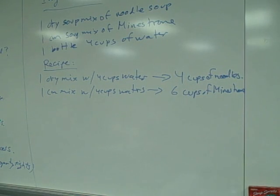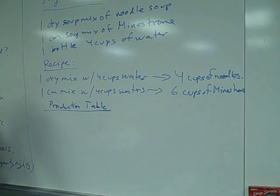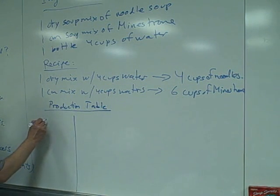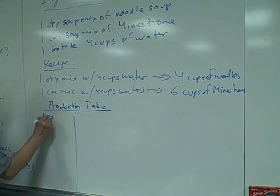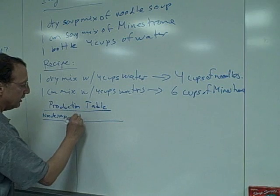The way we're going to do it is we're going to list our choices with a production table. The way we're going to list our production table is we're going to list how much we can do of each: noodle soup and minestrone.